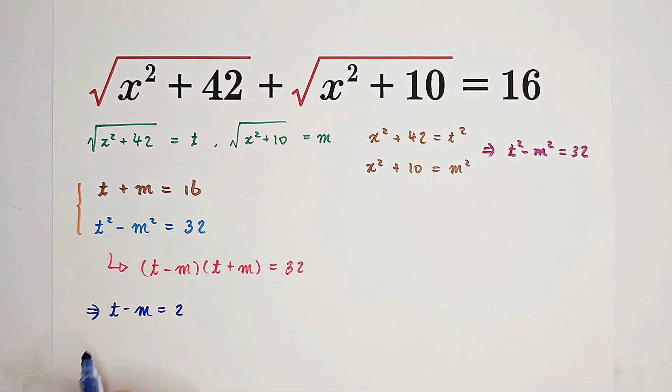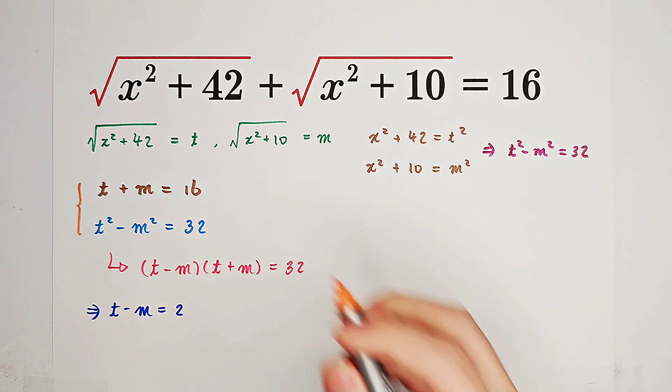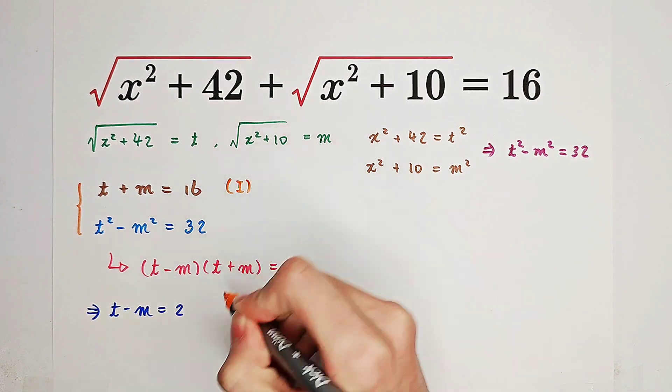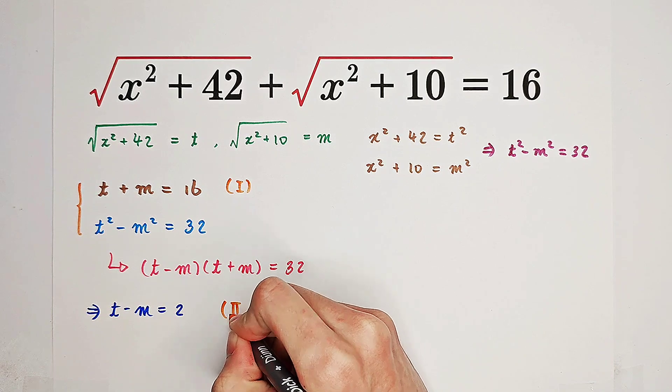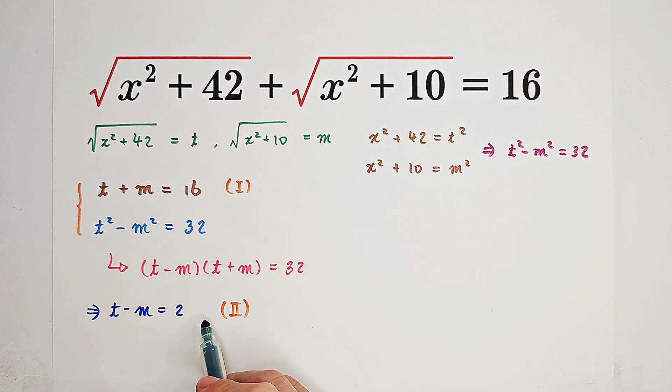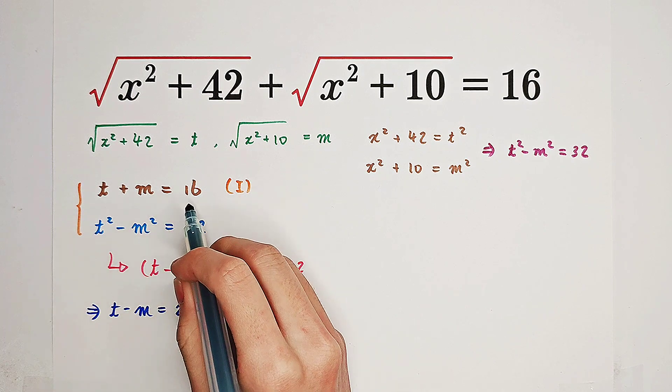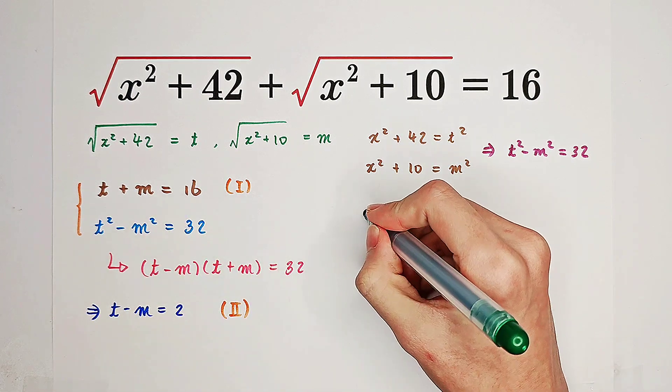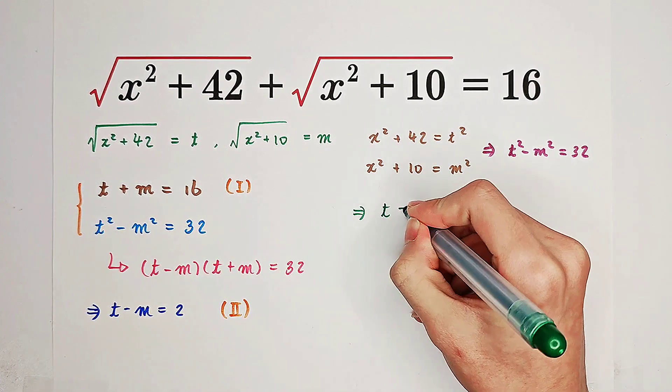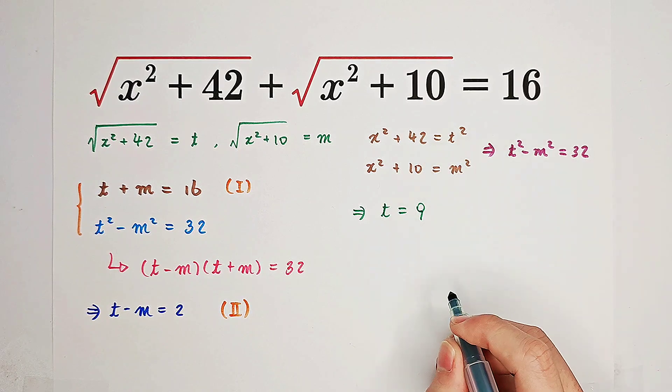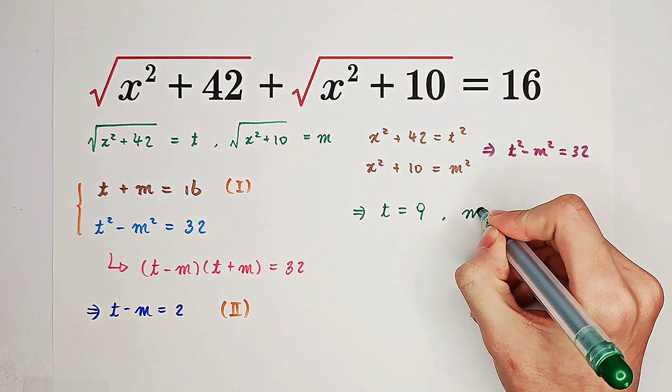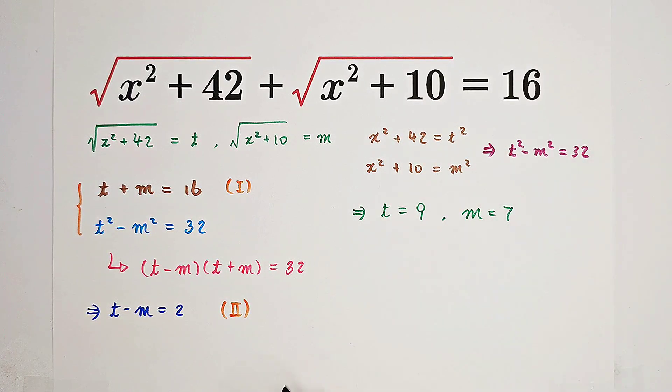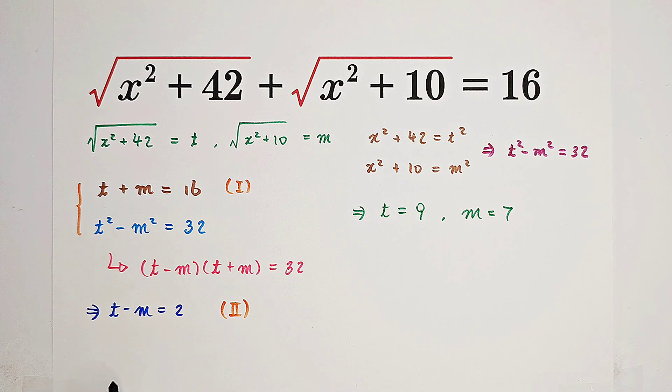t plus m equals 16, t minus m equals 2. This is our first equation, this is our second equation. So if we add these equations, we get 2t equals 18, so t is equal to 9. What about m? m is just 7, because 9 minus 7 is 2 and 9 plus 7 equals 16.